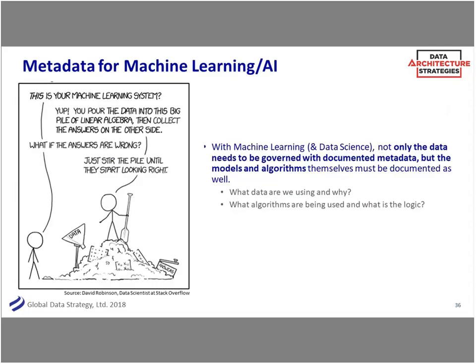Metadata for machine learning is fascinating. It's not only the data that was used, but what algorithm was used. There's a lot of controversy now: is there bias in algorithms? Can we publish what algorithm is being used to make a decision about a population or a marketing campaign? So it's not only the data that has metadata around it, but the algorithms themselves.